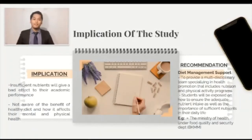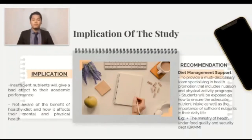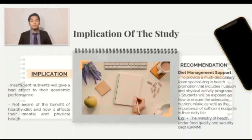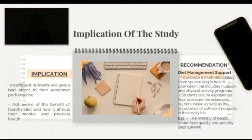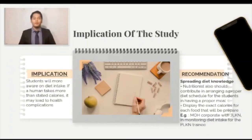Now we move to the implications and recommendations. First, it will create more awareness toward students on sufficient nutrition. Sufficient nutrition, when lacking, will give a bad effect on their current performance. Students are not aware of the benefits of a healthy diet and how it affects their mental and physical health. We recommend having diet management support. The university is encouraged to provide a multidisciplinary team specializing in health promotion that includes nutrition and physical activity programs to increase awareness among university students. We also suggest spreading diet knowledge in higher institutions.